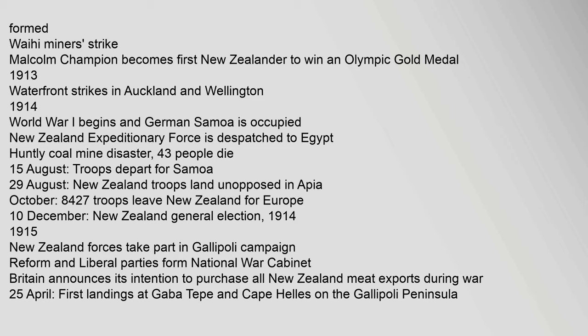1914: World War I begins. German Samoa occupied. New Zealand Expeditionary Force dispatched to Egypt. Huntly coal mine disaster — 43 people die. 15 August: Troops depart for Samoa. 29 August: New Zealand troops land unopposed in Apia. October: 8,427 troops leave New Zealand for Europe. 10 December: New Zealand general election. 1914–1915: New Zealand forces take part in the Gallipoli campaign. Reform and Liberal parties form National War Cabinet. Britain announces intention to purchase all New Zealand meat exports during the war.